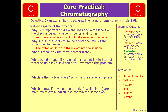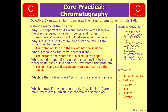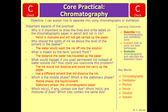What is meant by the term solvent front? That is simply the distance the water has travelled up the paper, which you can measure with a ruler. What would happen if you use permanent ink instead of water-soluble ink, and how could you overcome this problem? If it's permanent ink, which means insoluble, it wouldn't dissolve and it wouldn't get carried up the paper, so it would just stay there as a dot. The solution would be to find a solvent that did dissolve the ink. The mobile phase is the liquid or the solvent, and the stationary phase is the chromatography paper.